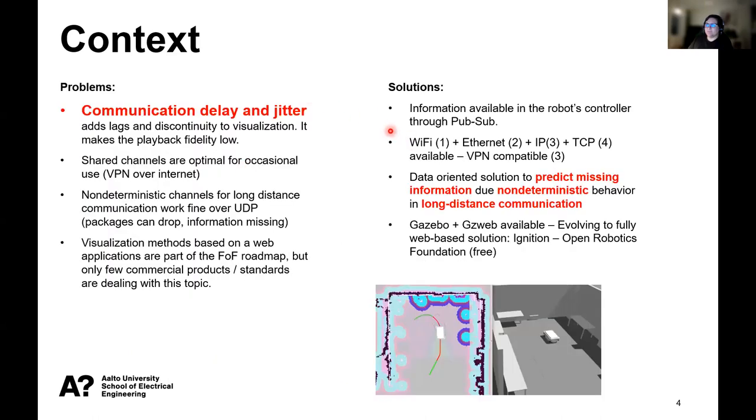Based on diagnostic information, the robot and the system use shared Wi-Fi, Ethernet IP, TCP and VPN. We are trying to predict the missing information or predict the information that comes delayed due to the non-deterministic behavior of long distance communication.